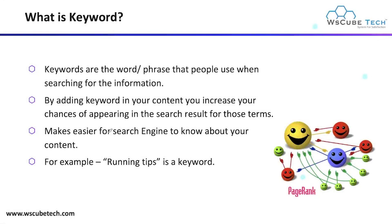Keywords are the words and phrases that people use when searching for information. When any person searches for information on Google, they use a particular term known as a keyword. By adding keywords in your content, you increase your chances of appearing in the search results for those terms.